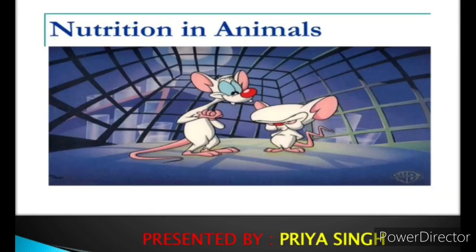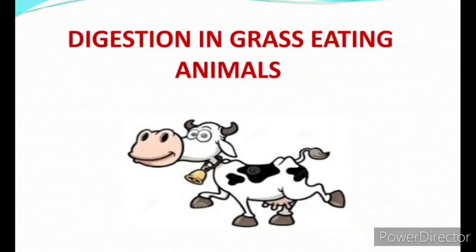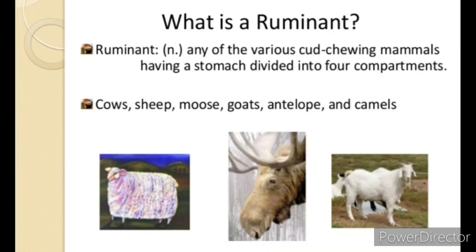In this video we will discuss digestion in grass-eating animals — how digestion takes place in such animals. Herbivorous animals such as buffalo, cow, goat, sheep, and deer mainly eat grass. Grass is a rich source of carbohydrate called cellulose. Cellulose is quite tough material, and this cellulose carbohydrate in grass can be digested by the action of certain bacteria which are present only in the stomach of animals called ruminants, like cows, buffaloes, and sheep.